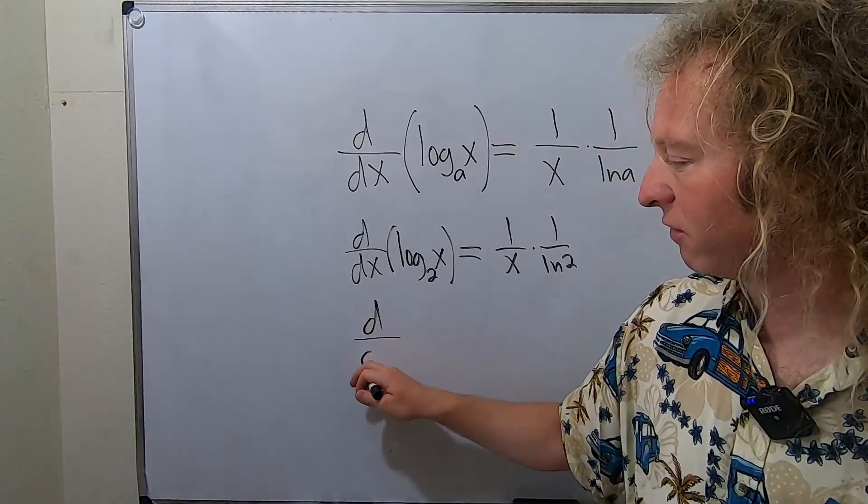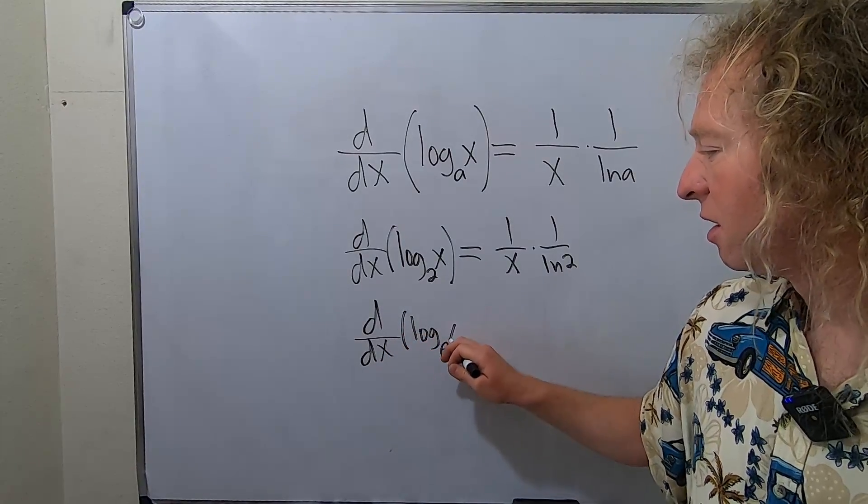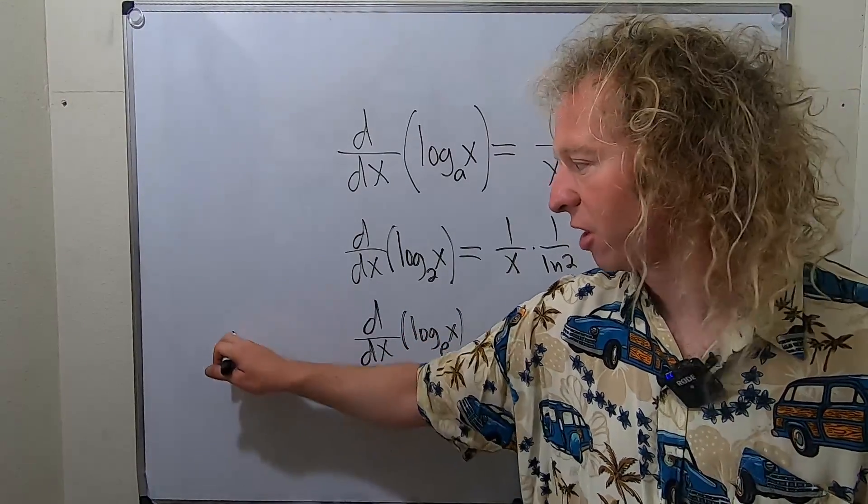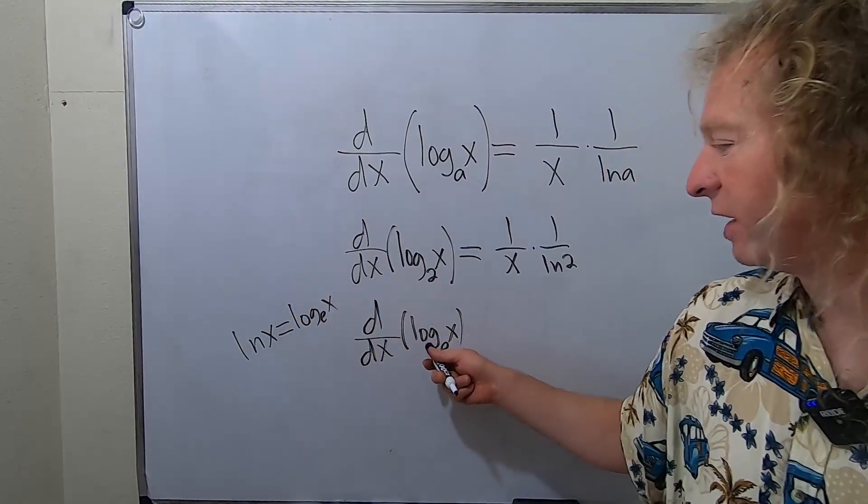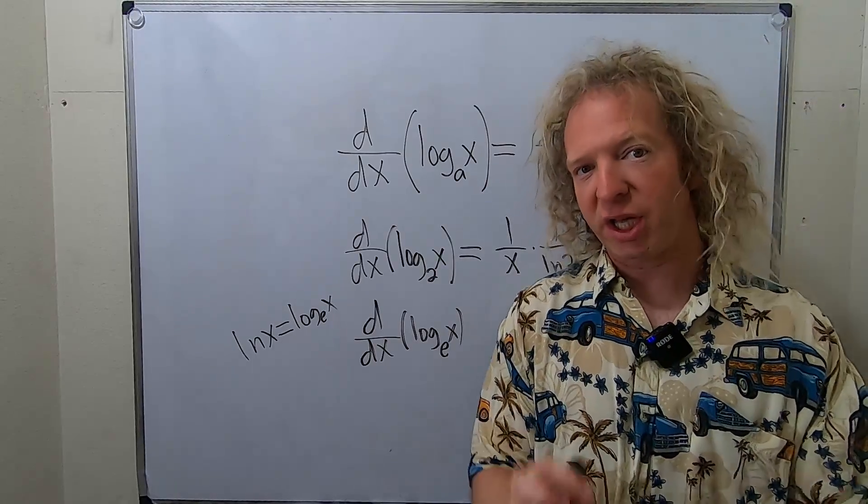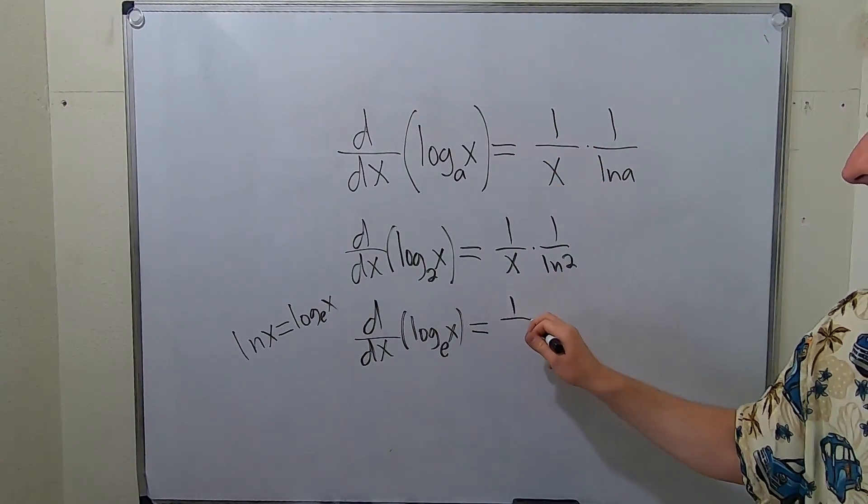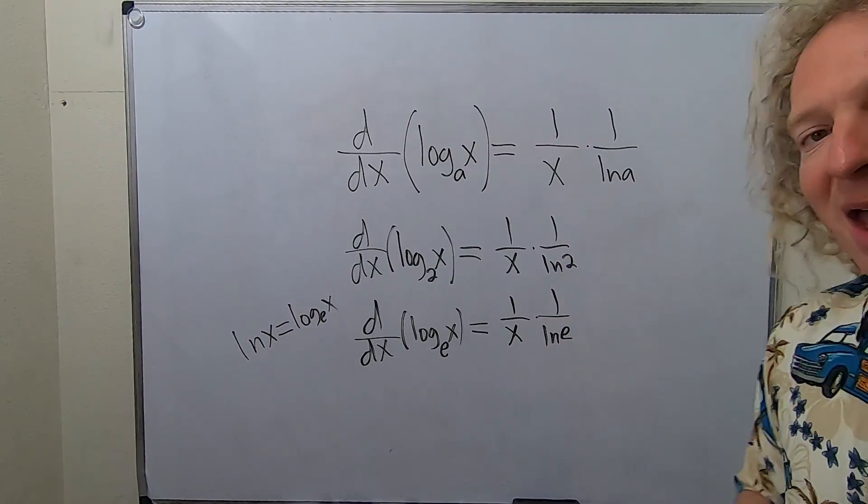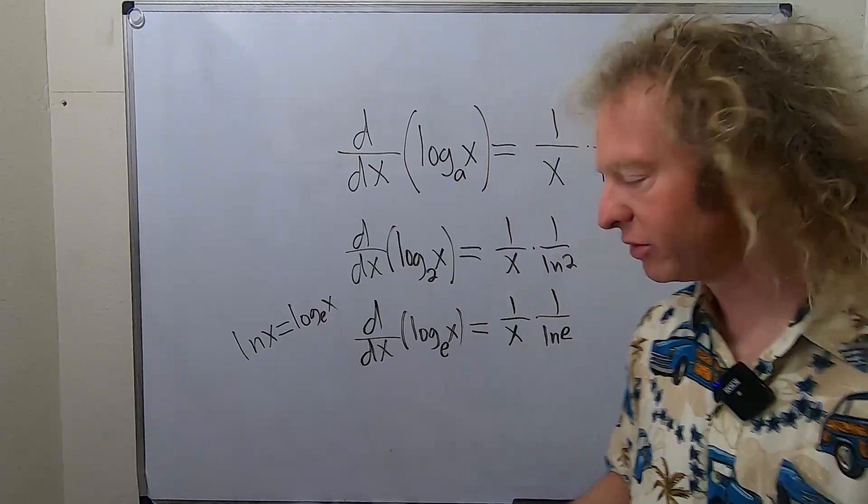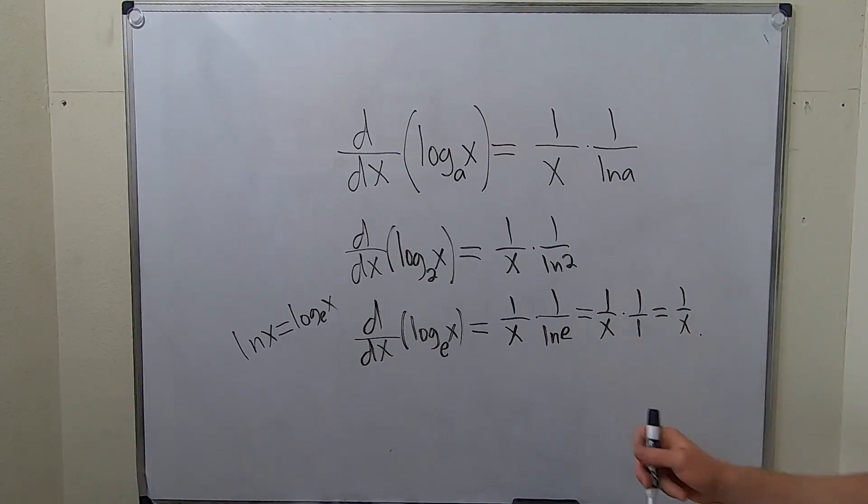Let's talk about what I said at the beginning. Log base e of x is the same thing as the natural log of x. ln x equals log base e of x. This is the derivative of ln x, so we should get 1 over x. Let's check: this will be 1 over x times 1 over ln e. ln e equals 1, so this is 1 over x times 1 over 1, which is just 1 over x. Boom, it checks. Super powerful formula.